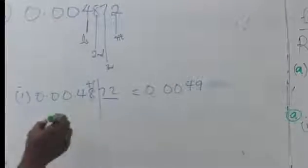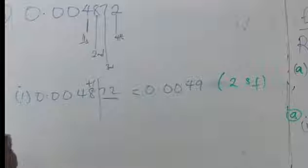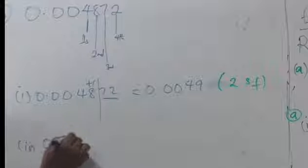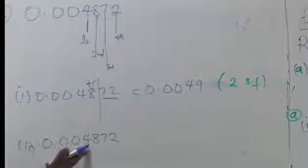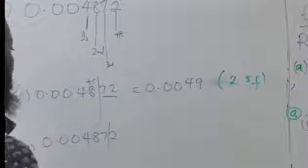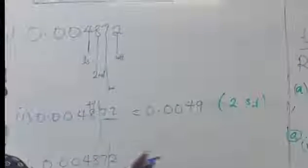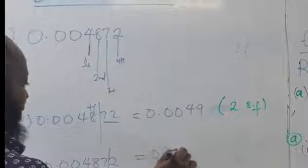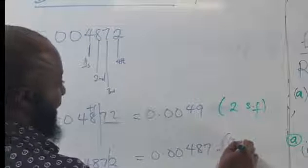Now rounding 0.004872 to 3SF: the first, second, and third significant figures are 4, 8, and 7. The next digit is 2, which is less than 5, so we round down. The answer is 0.00487 to 3SF.